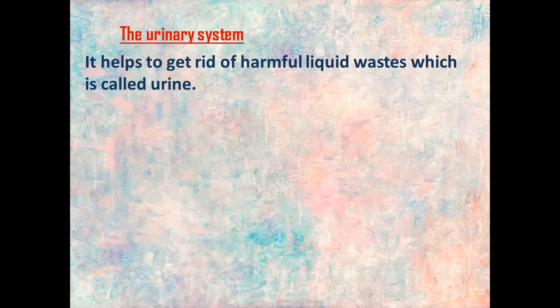We have two types of wastes: solid wastes and liquid wastes. Solid wastes we get rid of through the digestive system, but liquid wastes we get rid of through the urinary system, and these liquid wastes are called urine.